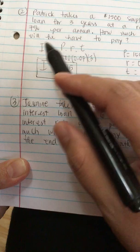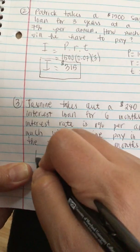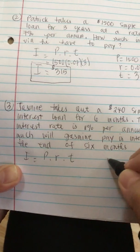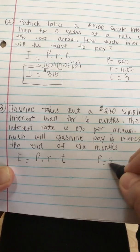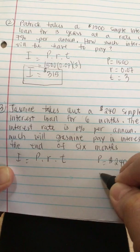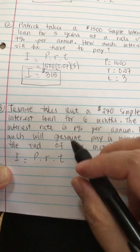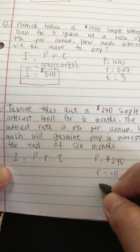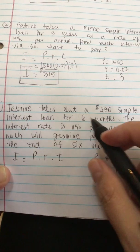Now we use the same formula. I is equal to P times R times T. So P is equal to $240. R is equal to 11% or 0.11 and T is equal to 6 months.